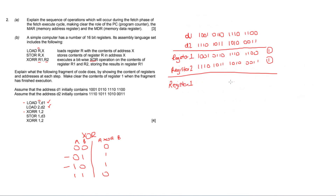Working through the XOR bit by bit: 1 XOR 1=0, 0 XOR 1=1, 0 XOR 1=1, 1 XOR 0=1, 0 XOR 1=1, 1 XOR 0=1, 1 XOR 1=0, 0 XOR 1=1, 1 XOR 1=0, 1 XOR 0=1, 1 XOR 1=0, 0 XOR 0=0, 1 XOR 0=1, 1 XOR 0=1, 0 XOR 1=1, 0 XOR 1=1. Take it slowly and you've completed this line of assembly code.